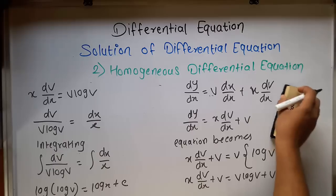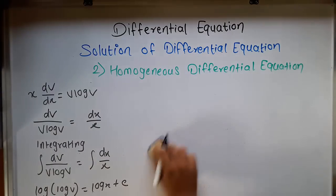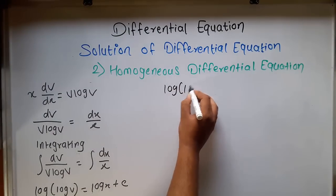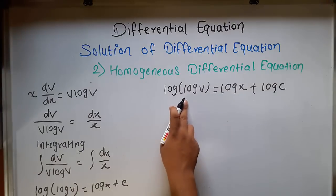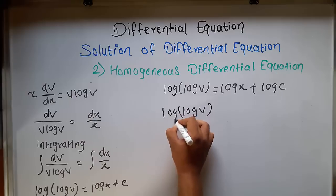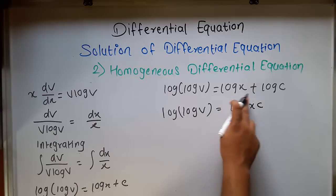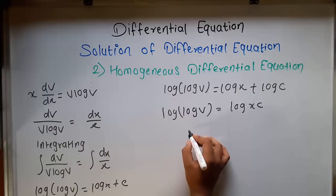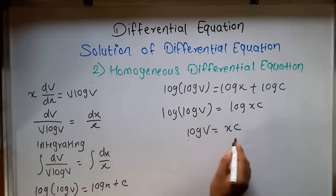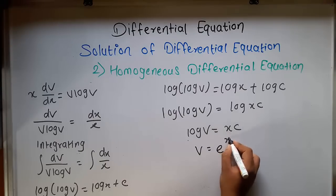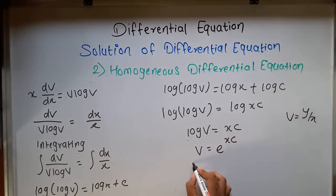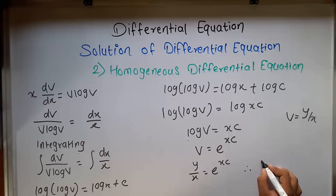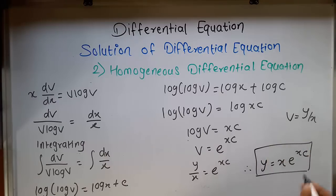Now we write c as log c since c is a constant. So log(log v) equal to log x plus log c, which gives log(log v) equal to log(xc), using log a plus log b equals log ab. The outer logs cancel, giving log v equal to xc. Transferring log to the other side: v equal to e raised to xc. Substituting back v equal to y/x, we get y/x equal to e raised to xc. Therefore, y equal to x·e raised to xc. This is the solution of the equation.